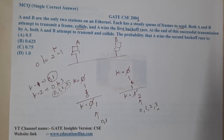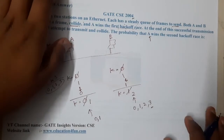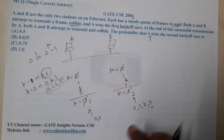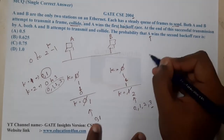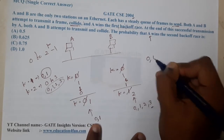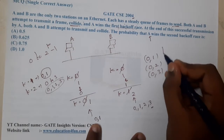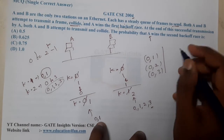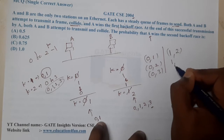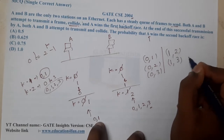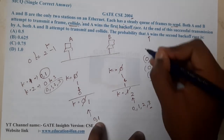Now, when will A win? A wins when it has the least value and B has a greater value. So the winning combinations for A are: (0,1), (0,2), (0,3) — three options when A picks zero. When A picks one, B can pick two or three — that gives two more options. So the total combinations where A wins is five.